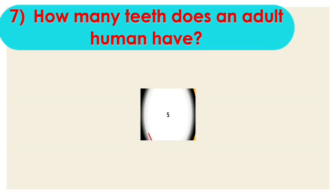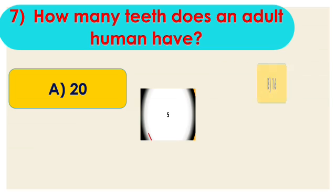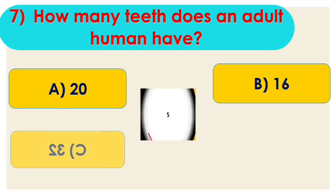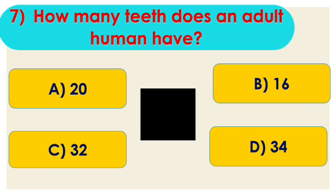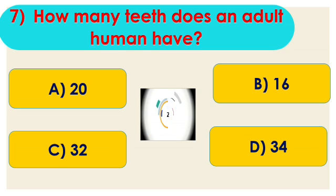Question number 7: how many teeth does an adult human have? Options are A. 20, B. 16, C. 32, and D. 34. The right answer is option C — an adult human has 32 teeth. Children, like you, have 20 primary teeth, and when you grow up you will also have 32 teeth.